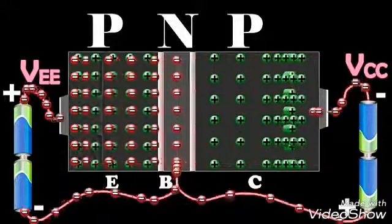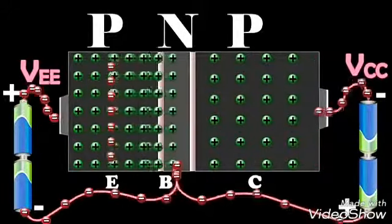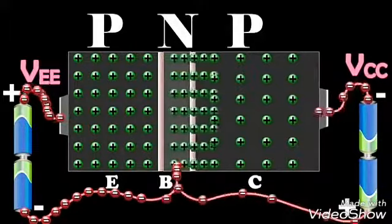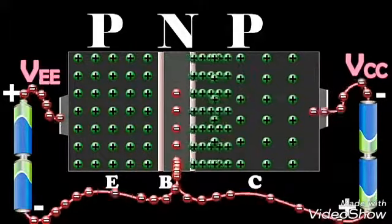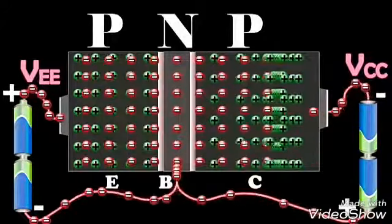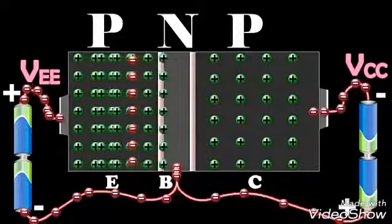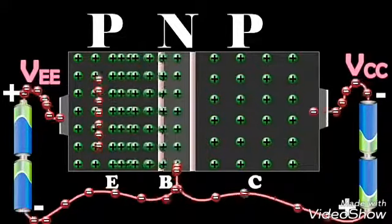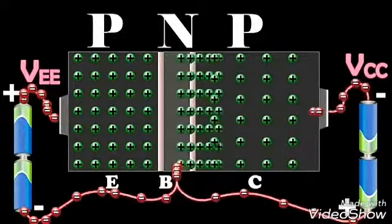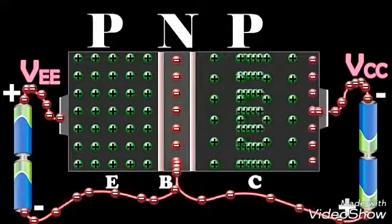These holes take a very small time to flow through the base region before they reach the depletion region. During this time, a very small number of holes recombine with an equal number of electrons in the base, because the base is lightly doped and very thin. This number is very small.